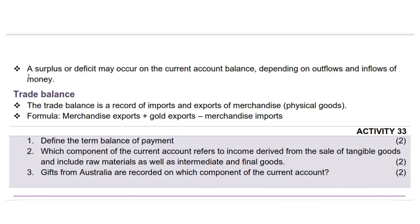That's it for the current account and its components. We conclude our lesson with Activity 33. Question 1: Define the term balance of payments. Two marks. Question 2: Which component of the current account refers to income derived from the sale of tangible goods and includes raw materials as well as intermediate and final goods? Two marks. Question 3: Gifts from Australia are recorded on which component of the current account? Two marks.